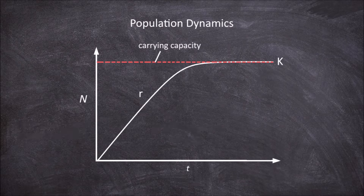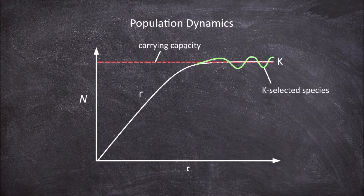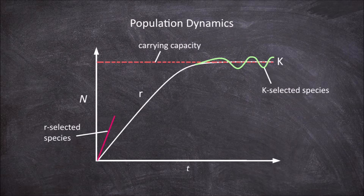K selected species, or K strategists, get their name because they live in stable environments and have populations that lie close to the carrying capacity K. R selected species, or R strategists, on the other hand tend to live in unstable environments, have low survivability of offspring, and short life spans. This means their population is usually much smaller than the carrying capacity, governed by high rates of population growth that then drop back down due to the unstable conditions and low survivability.